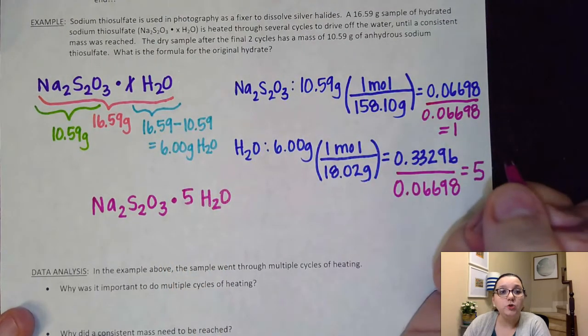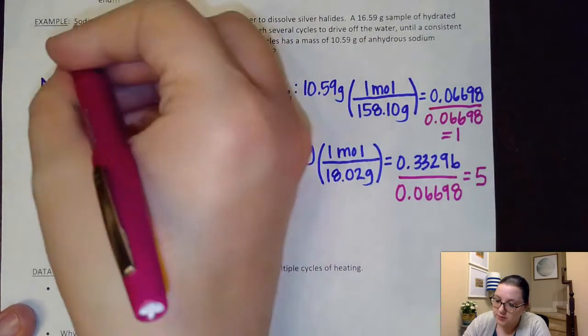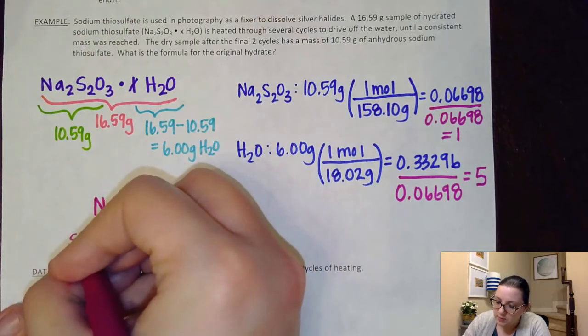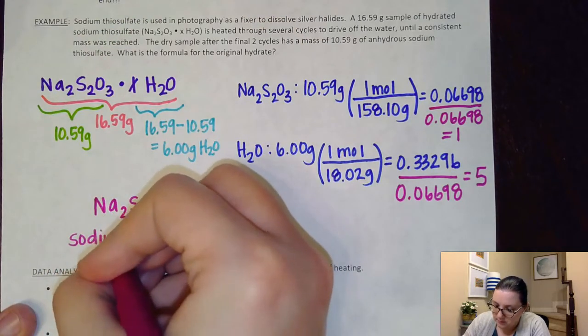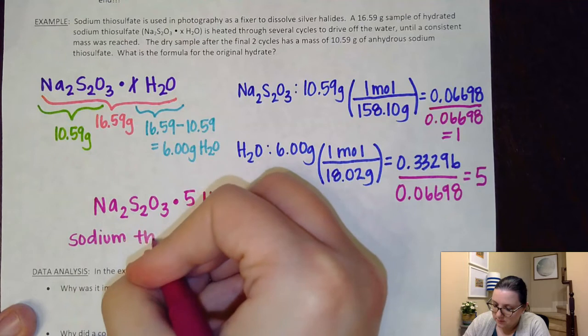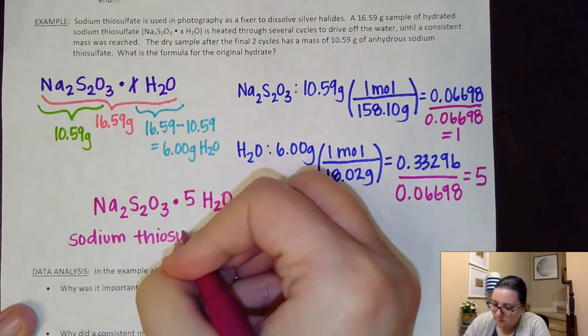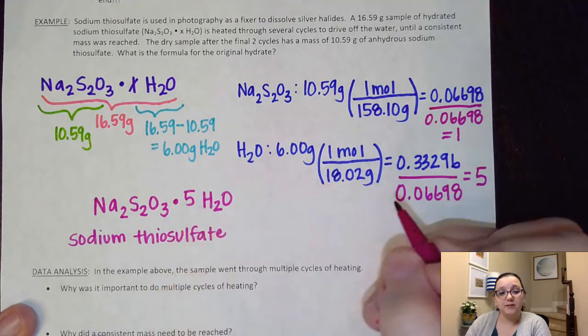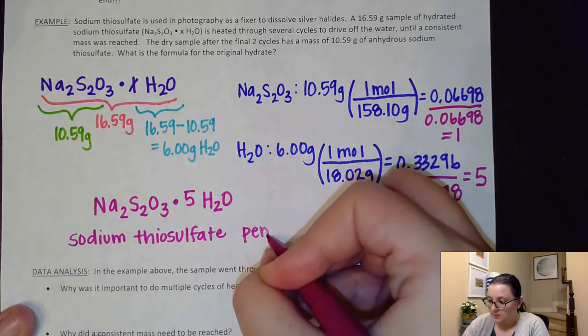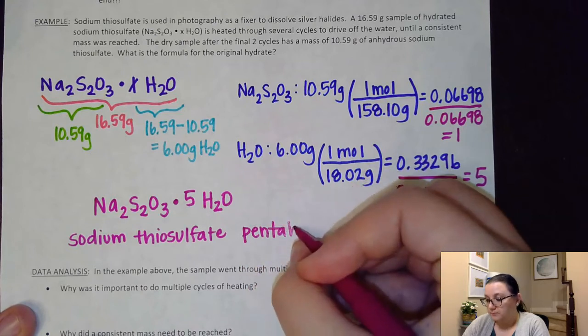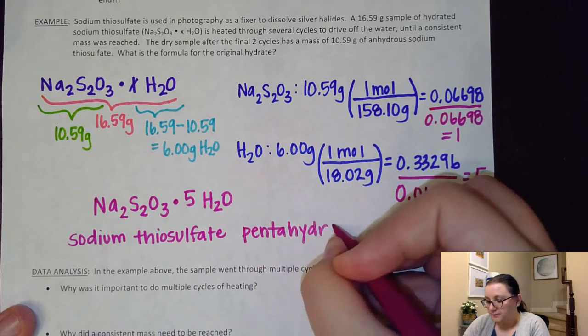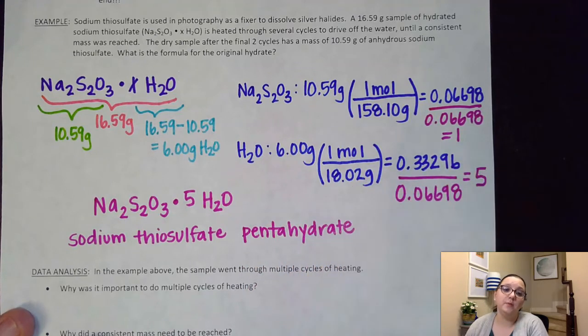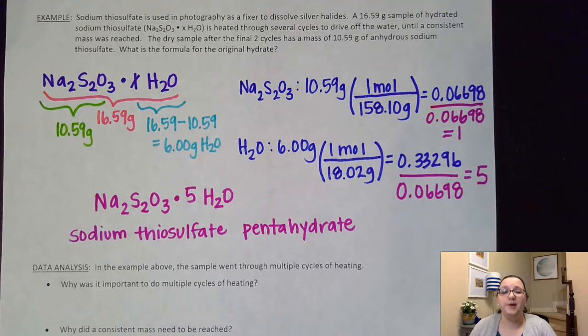And if I was going to name this, what I would do is I would use the sodium thiosulfate part of the name that they already gave me. And then the prefix for five is penta, and then I put hydrate after it. So there would be the name of the compound, sodium thiosulfate pentahydrate. And you can see our formula right there.